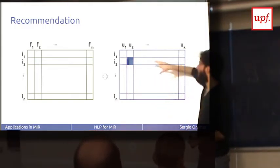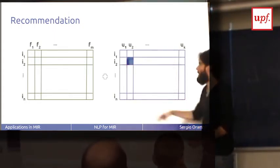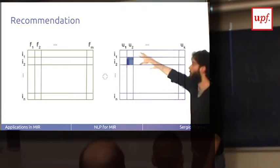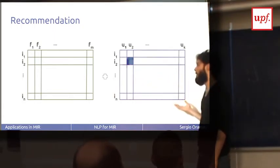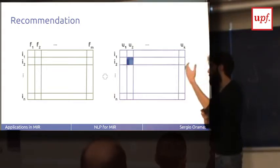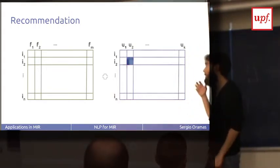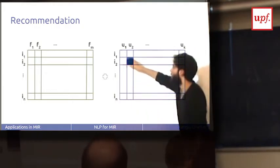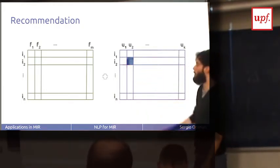And this is recommendation. We have two matrices in recommendation. We have a matrix of items and features, and we have another matrix — a matrix of items and users — where there is information about whether a user liked or didn't like, or liked a lot, an item, depending on the problem.